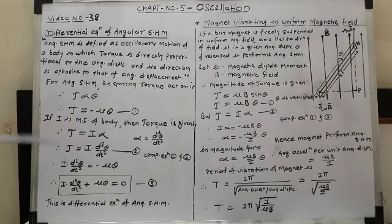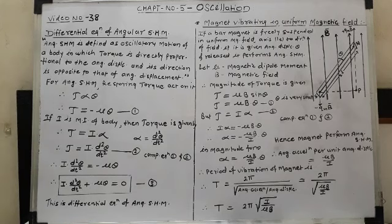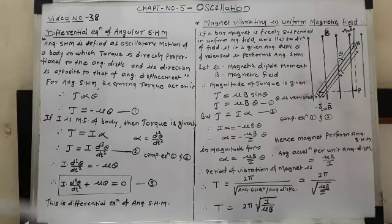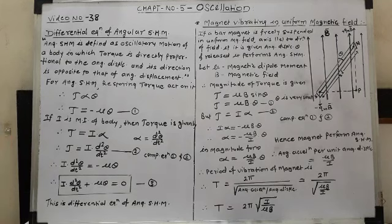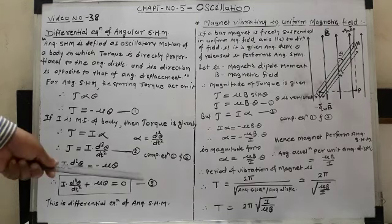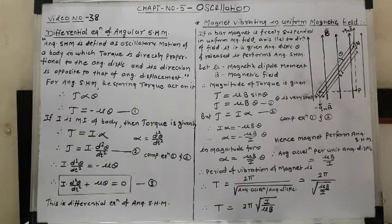Comparing equations 1 and 2, since the left-hand sides are both equal to τ, we can equate the right-hand sides: I·d²θ/dt² = −μθ. Rearranging, I·d²θ/dt² + μθ = 0. This is equation number 3, which is known as the differential equation of angular SHM.